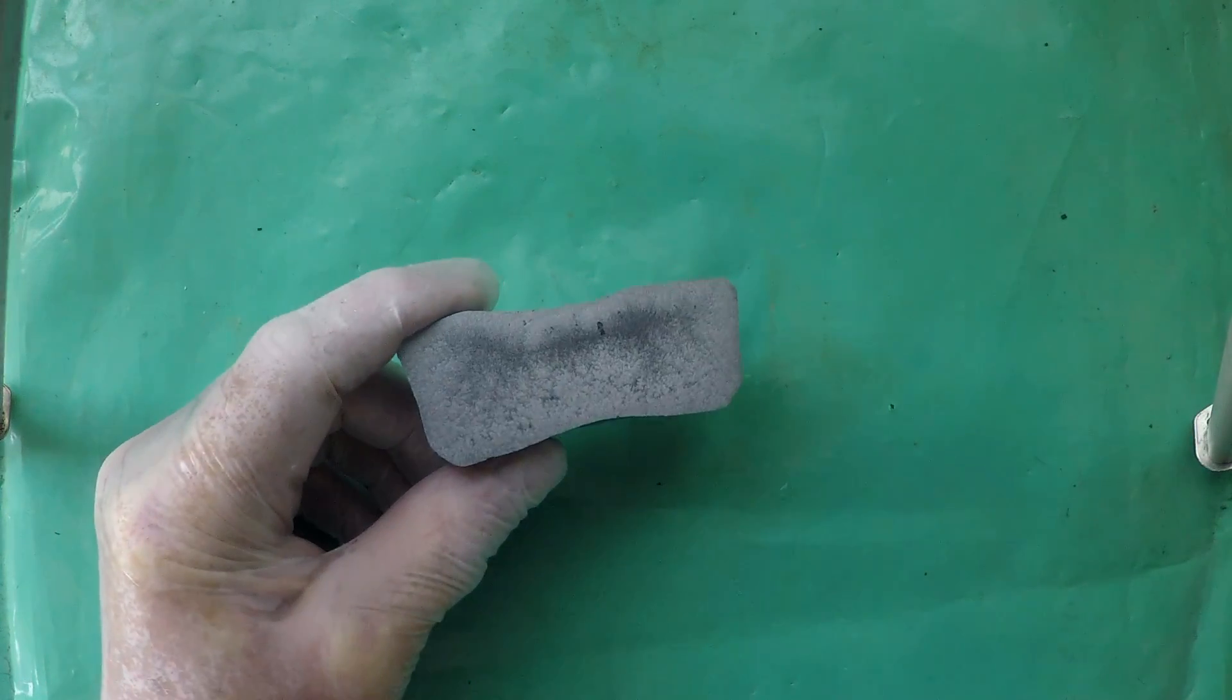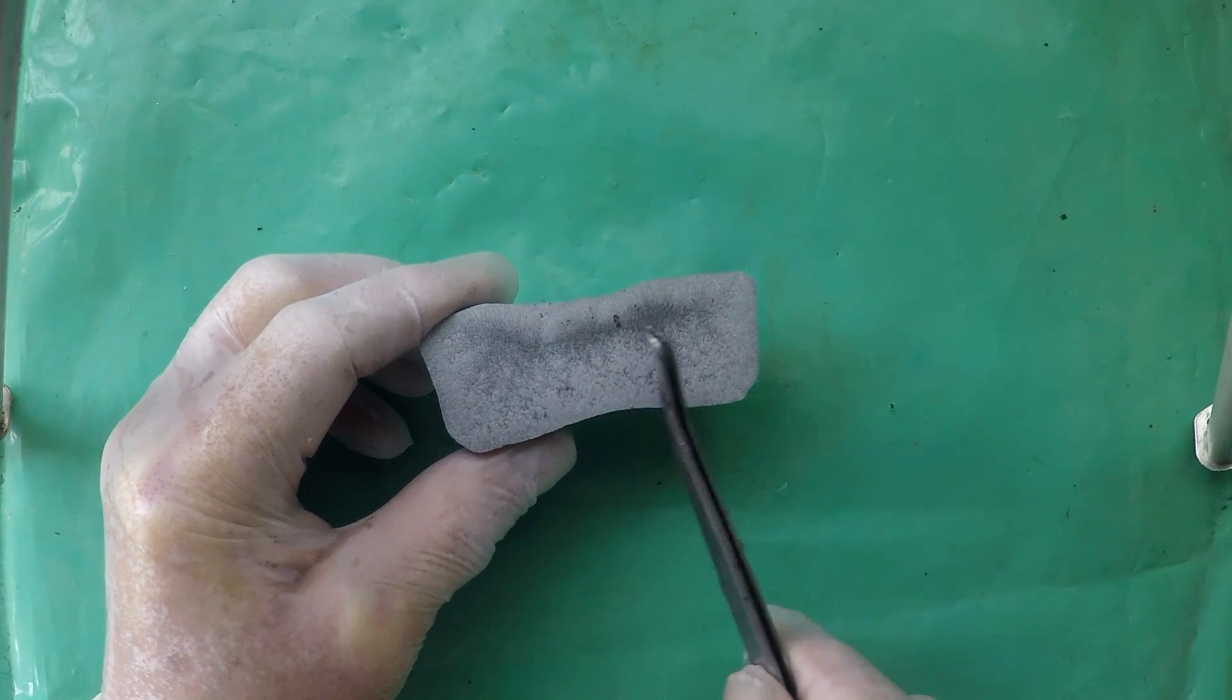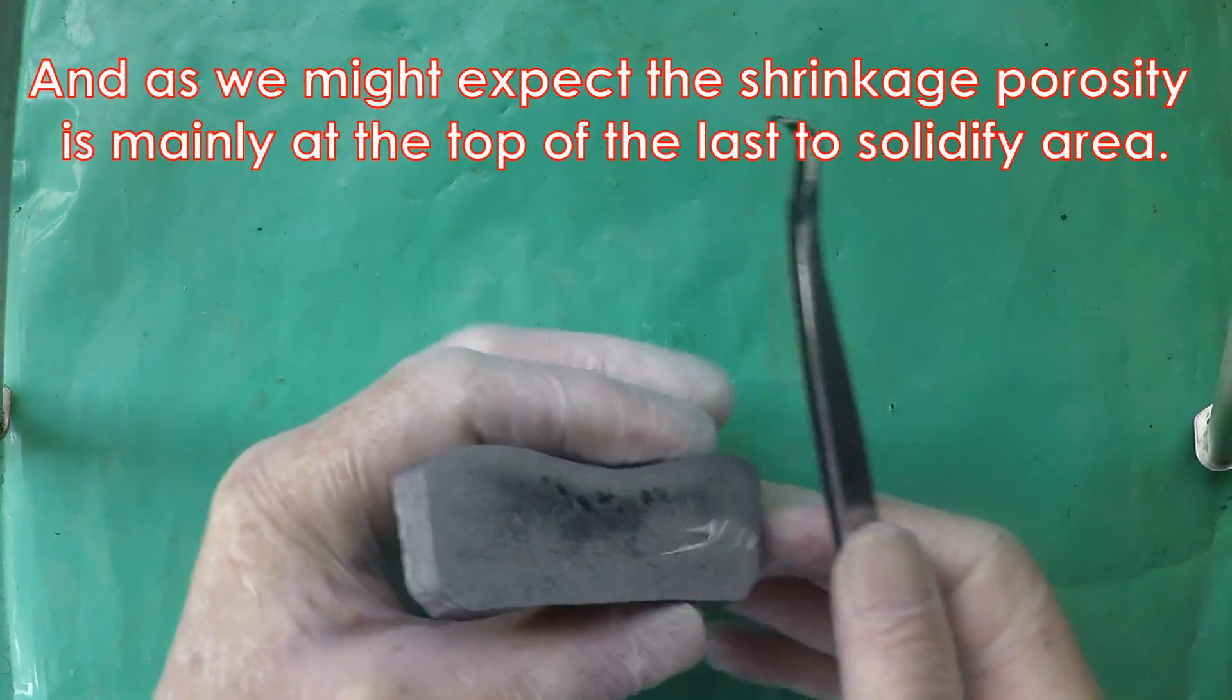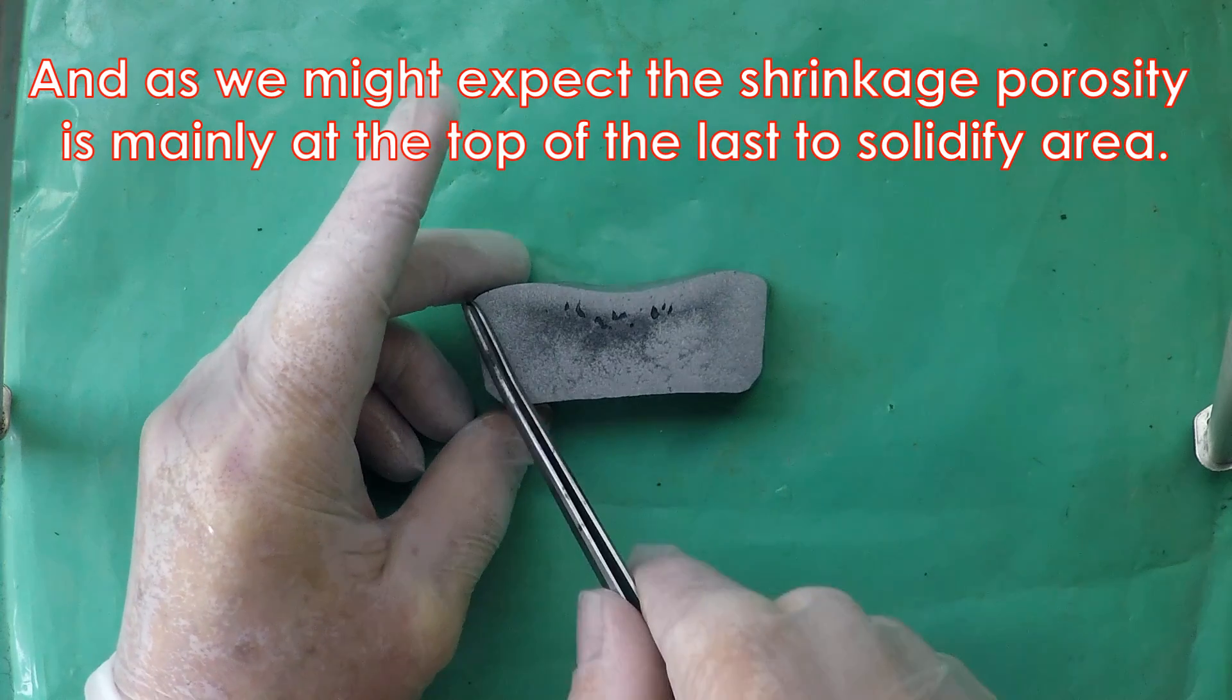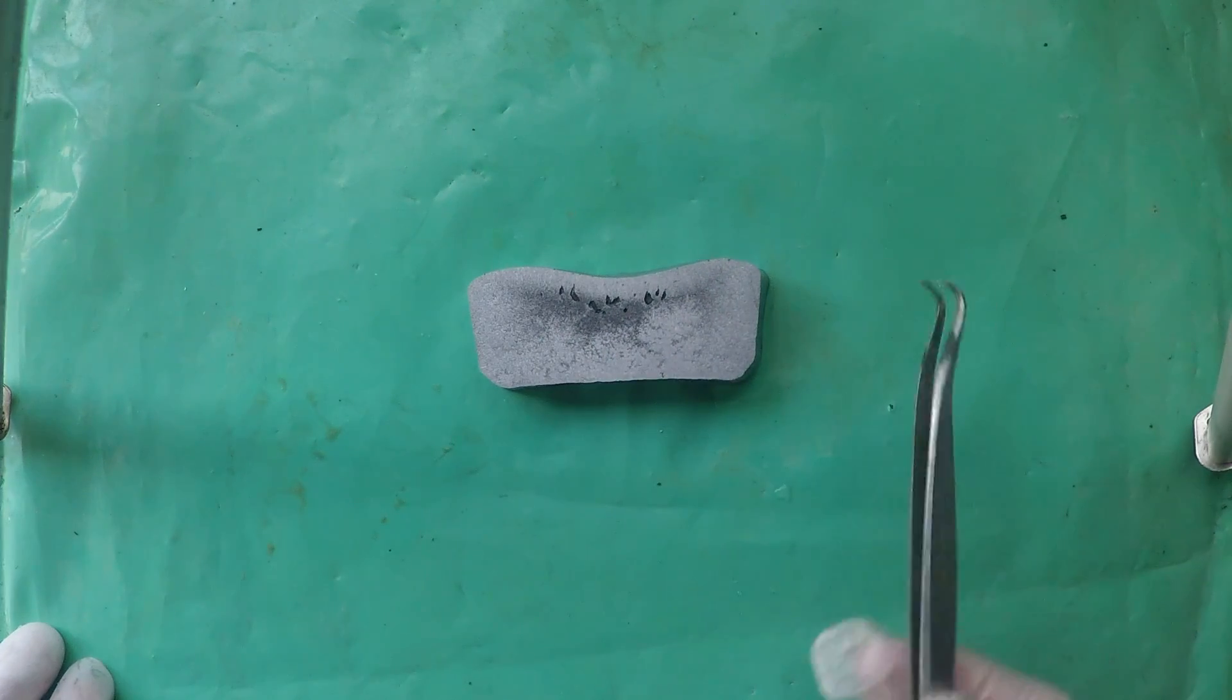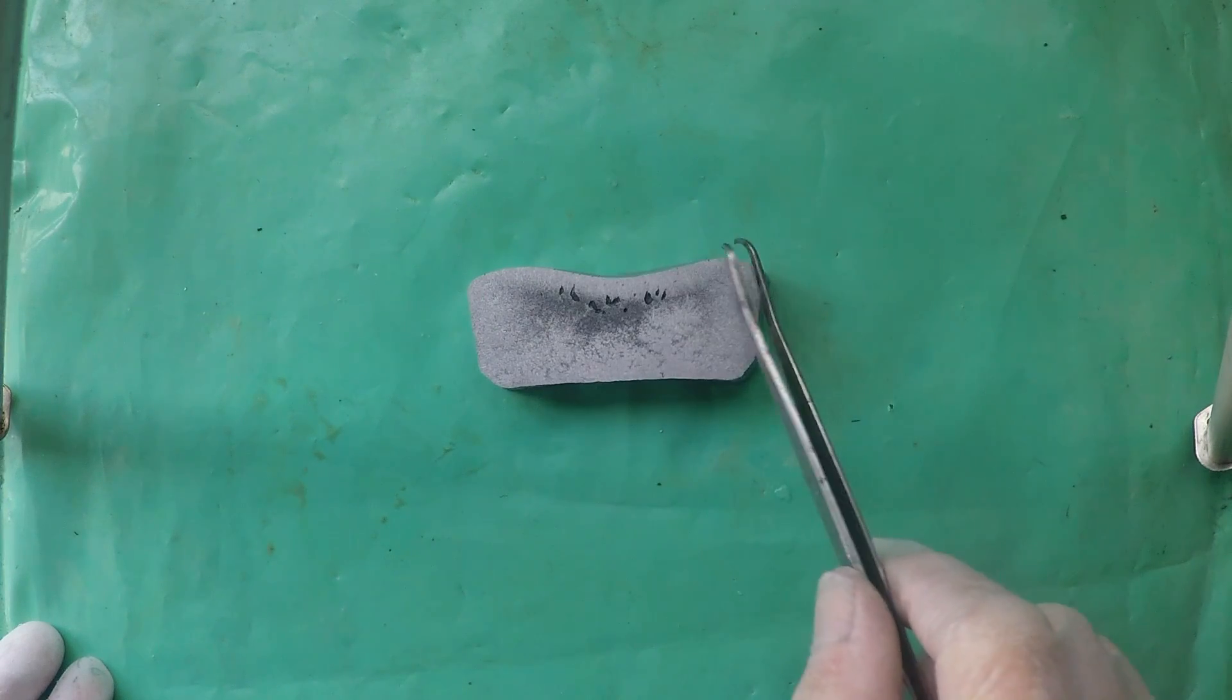And here we have our etched caustic soda etched aluminium sample. The grey area, oh the spray's still in the air, that grey area is probably where it solidified last. And this would be typical because it would solidify quickly here against the steel mould that I cast it into. But the mould was a bit hot.